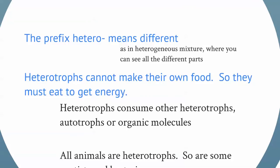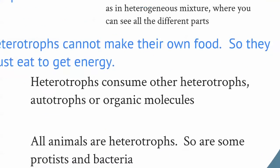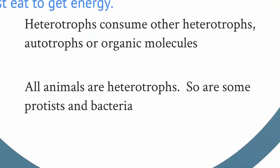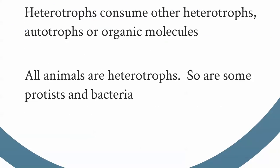Heterotrophs can't make their own food, so they eat other things to get energy. Heterotrophs consume other heterotrophs, or autotrophs, or organic molecules. All animals are heterotrophs, and so are some protists and bacteria.